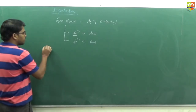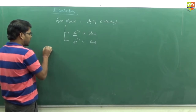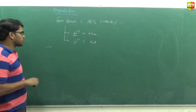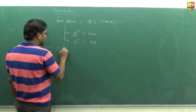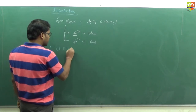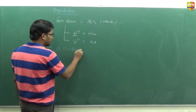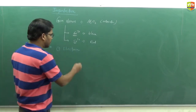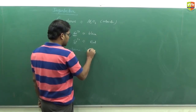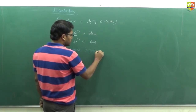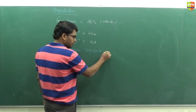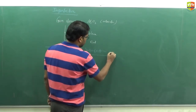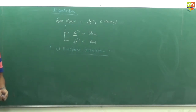There are two types of imperfections. The first one is electronic imperfections. As the name suggests, electronic imperfections happen because of electrons — due to the irregular arrangement of electrons. You have studied semiconductors in physics: P-type, N-type, and doping.